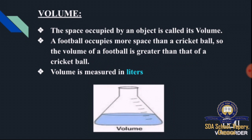The space occupied by an object is called its volume. Consider a balloon — we can fill the air only up to a limit. If we fill more gas, it will burst. So the space occupied by an object is called its volume. Another example: a football occupies more space than a cricket ball, so the volume of the football is greater than that of a cricket ball. Volume is measured in liters.